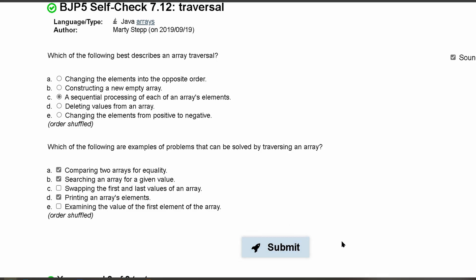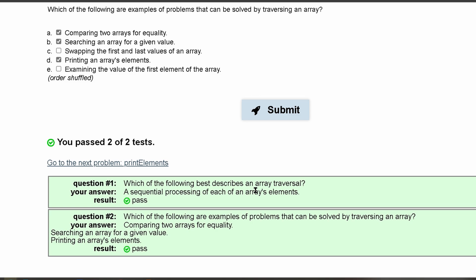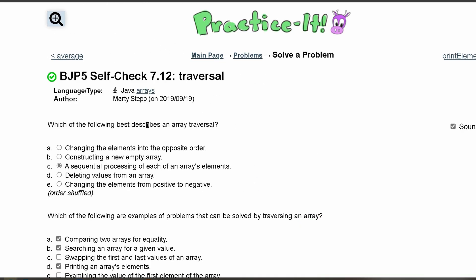We can press submit, and we've passed two out of two tests. So that's how I would look at this self-check 7.12.